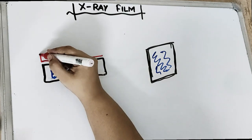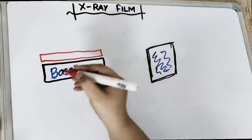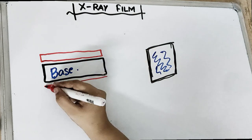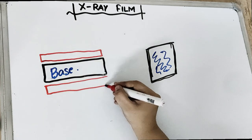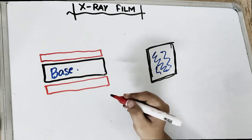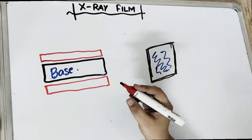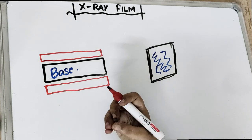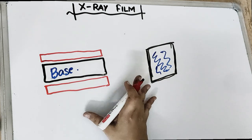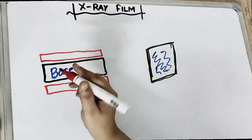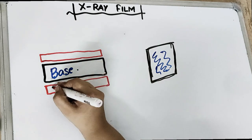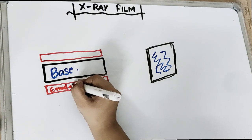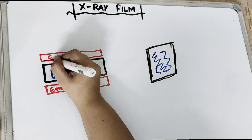Above the base we have the emulsion layer. The emulsion layer is thinner. Why do we require the emulsion layer? Because we want something that is sensitive to x-rays — this emulsion is sensitive to x-rays as well as to visible rays also. So we have got emulsion on both sides.